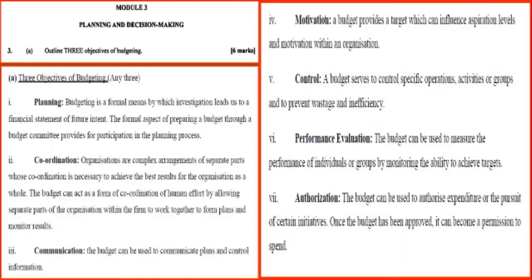Seventh: authorization. The budget can be used to authorize expenditure or the pursuit of certain initiatives. Once the budget has been approved, it can become a permission to spend.